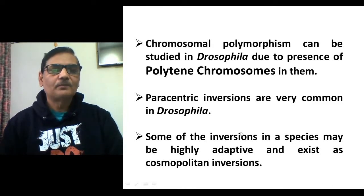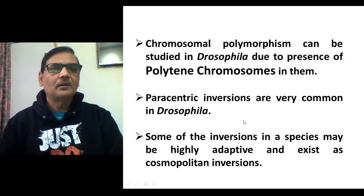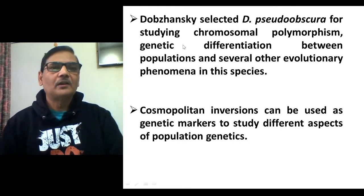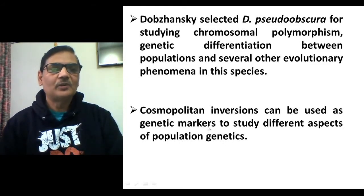Some inversions in a species may be highly adaptive and exist as cosmopolitan inversions — that is, in several populations of that species certain inversions become very common and occur very frequently. Dobzhansky, a well-known population geneticist, selected Drosophila pseudo obscura for studying chromosomal polymorphism, genetic differentiation between populations, and several other evolutionary phenomena. Cosmopolitan inversions can be used as genetic markers to study different aspects of population genetics.